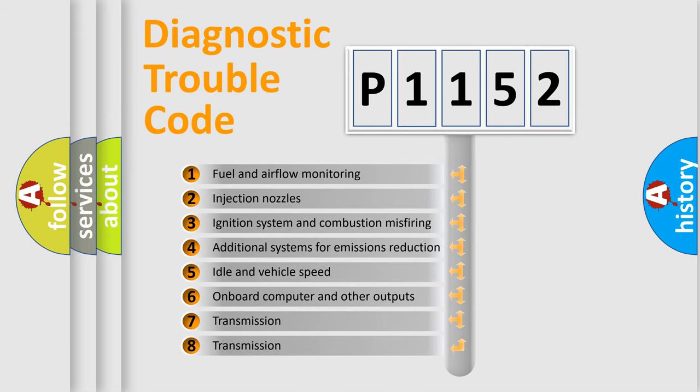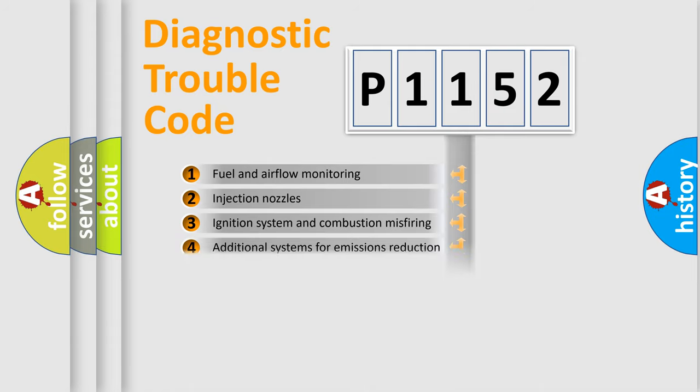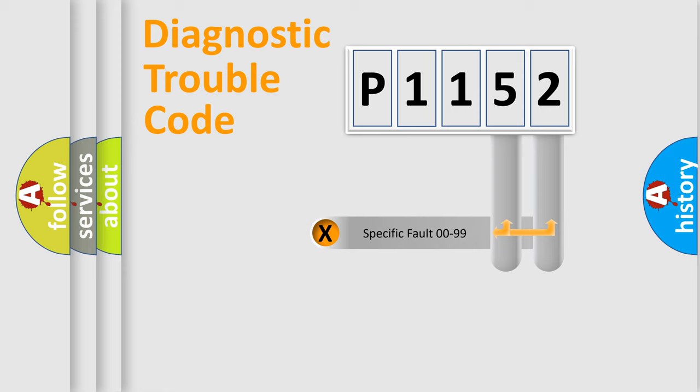The third character specifies a subset of errors. The distribution shown is valid only for the standardized DTC code. Only the last two characters define the specific fault of the group.